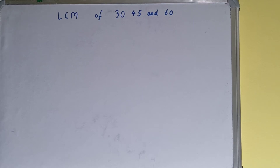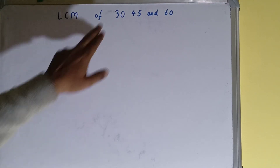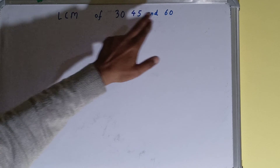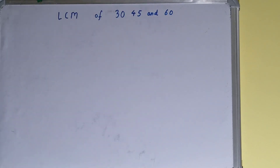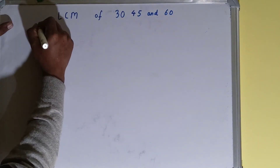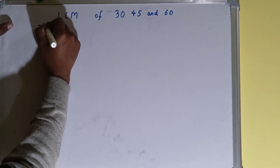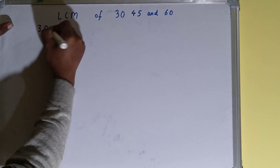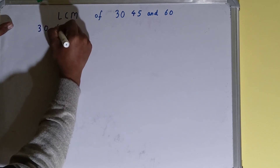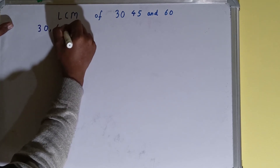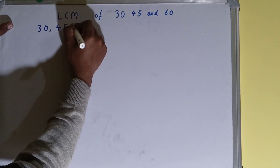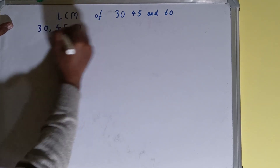Hello friends, in this video we'll find the LCM of the numbers 30, 45, and 60. To find it out, we first need to write all three numbers like this: 30, 45, 60.